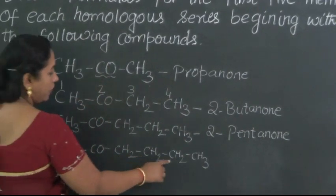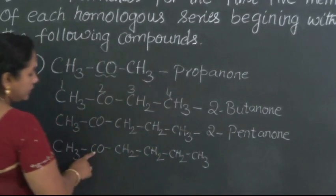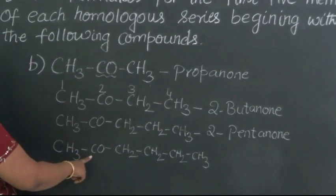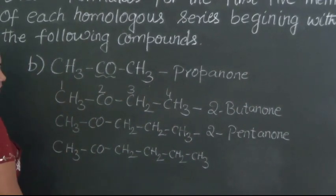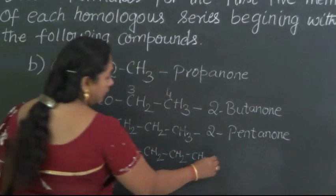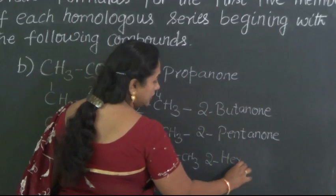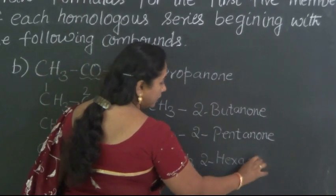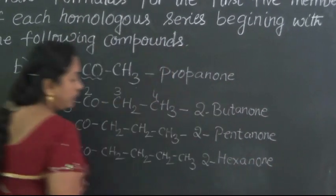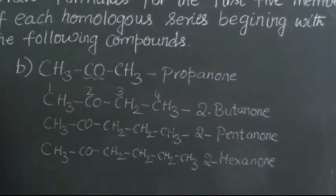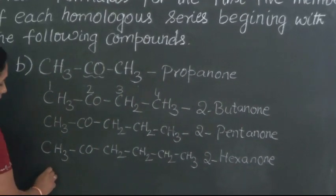So one, two, three, four, five, six, and for the second carbon atom that itself is the ketone. So therefore the name of this compound is 2-hexanone because all of them are saturated. So we are just writing the saturated compounds.